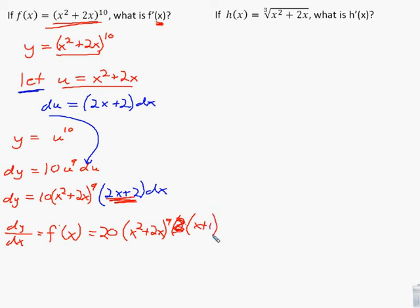To find f prime of x, we divide both sides by dx to get dy/dx. We can simplify: factor out a 2, giving 10 times 2 equals 20. So dy/dx equals 20 times x squared plus 2x to the 9th, times x plus 1. We divided both sides by dx, which cancels, giving us dy/dx as our final answer.